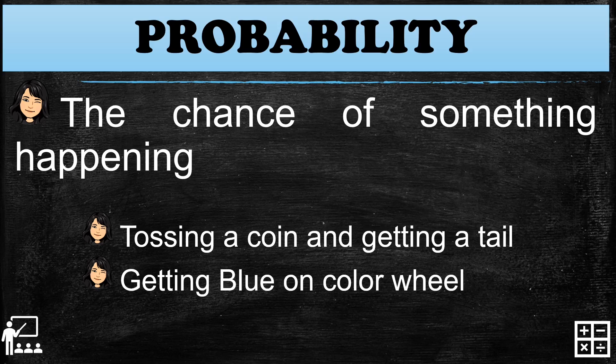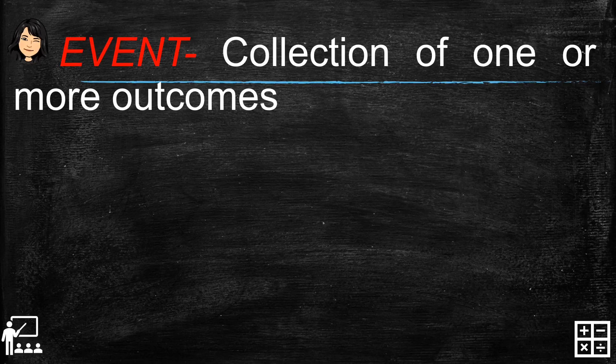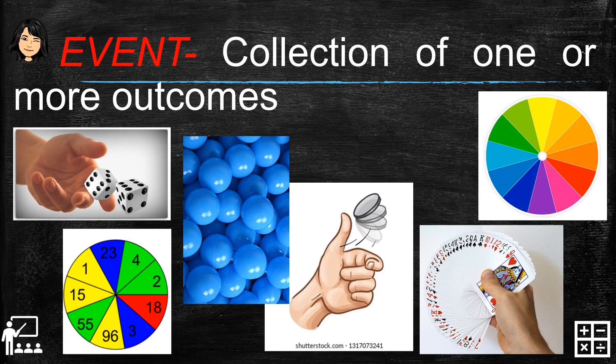Probability can be done in an experiment. An experiment or an event is the collection of one or more outcomes. Here are different experiments: rolling a dice, spinning a wheel, playing on a ball pit, tossing a coin, and picking cards from a deck — these are experiments we may use to get collections of one or more outcomes.